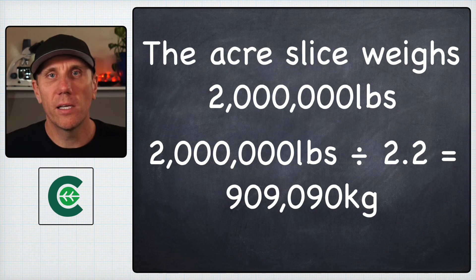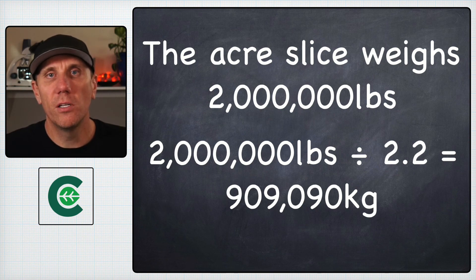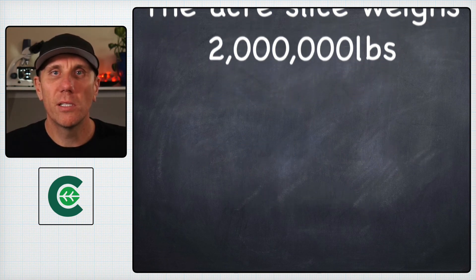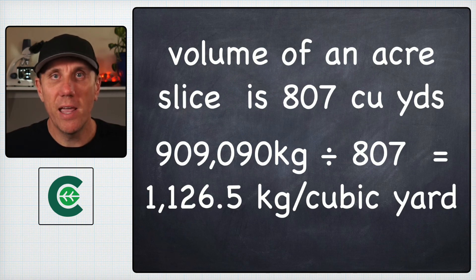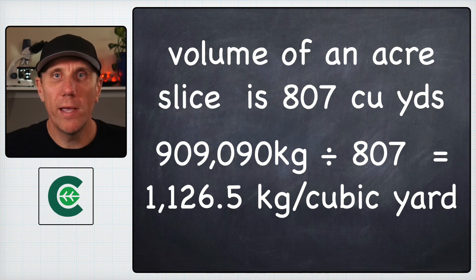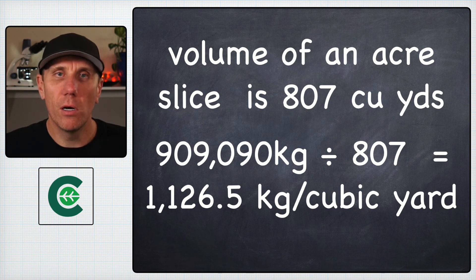Now that our soil weight is in kilograms, it's easier to convert it into grams per cubic centimeter because that's what the bulk density value is. If the volume of a six inch acre slice of soil is roughly 807 cubic yards, we can divide that kilogram acre slice weight by 807 and we get 1,126.5 kilograms per cubic yard.